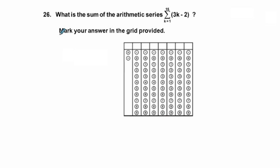Pre-Calculus Fall 2019 ACP Preview. This is problem 26. What is the sum of the arithmetic series? And we have the sum from k equals 1 to 15 of 3k minus 2.